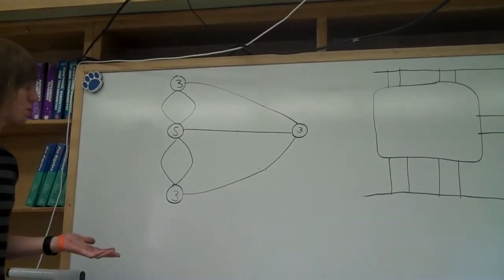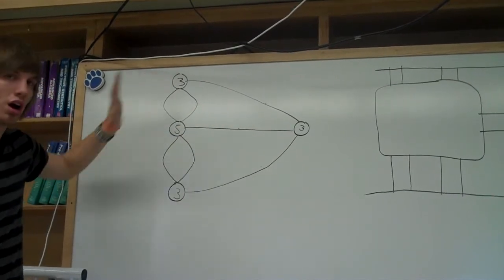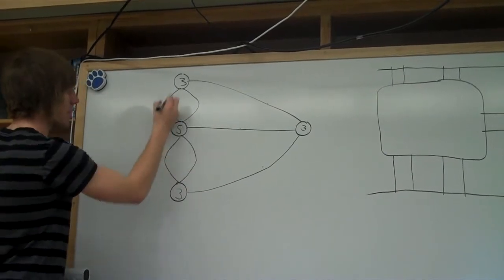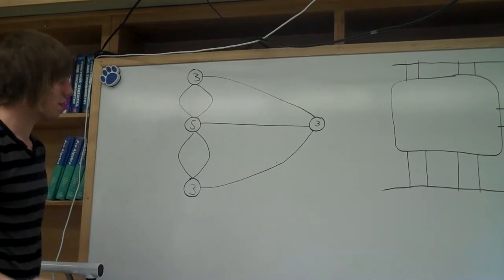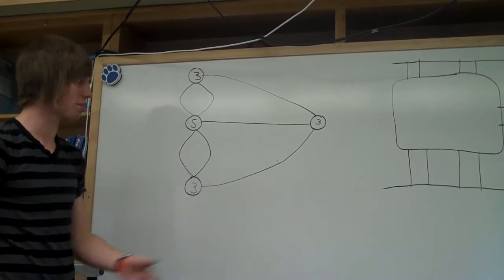Now, in math terms, if more than two of these have an odd number of vertices attached to them, you cannot trace over every single line once and one time only without picking up your pencil. So, therefore, you cannot walk over the bridges one time and one time only.